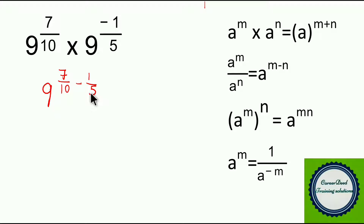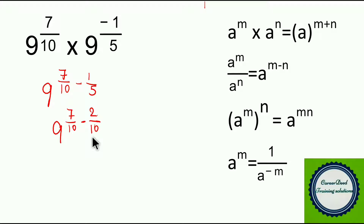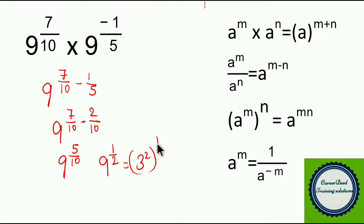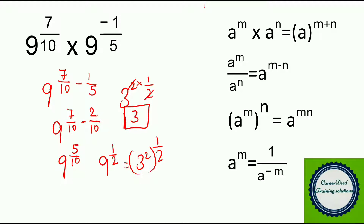Here you have two different denominators. Take the LCM of 10 and 5, which gives 10. So: 9^(7/10 − 2/10) = 9^(5/10) = 9^(1/2). Now write 9 as 3², so (3²)^(1/2). This is in the format (a^m)^n = a^(mn), giving 3^(2 × 1/2) = 3^1 = 3. The answer for this question is 3.